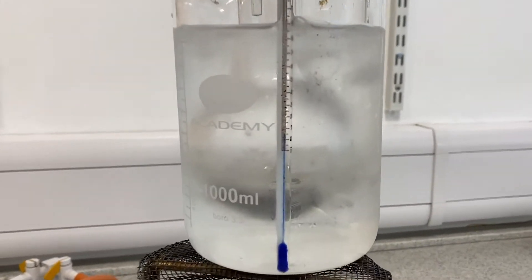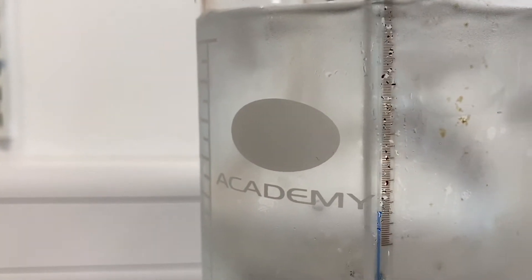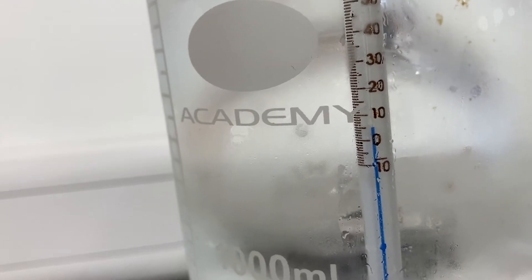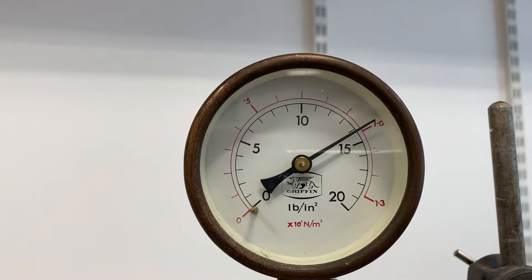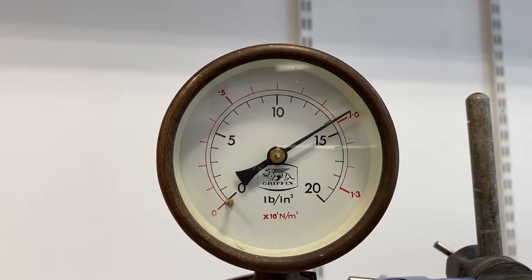So we've got a round bottom flask of air submerged in a beaker of cold water with ice in it. That water is about 5 degrees C and the pressure of that air in the flask at the moment, using the red scale on this pressure gauge, each digit is 0.1.